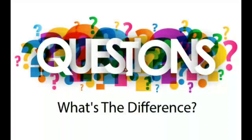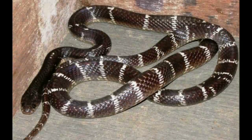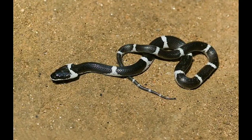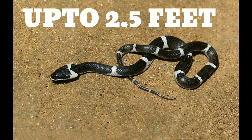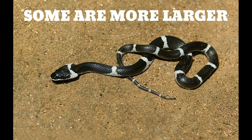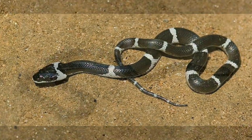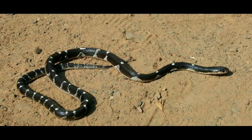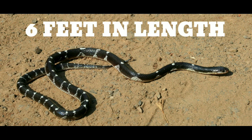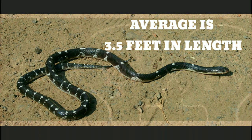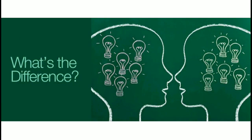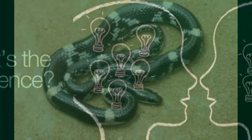Let us have a look at the differences. Length: wolf snakes and common kraits are different in size. An adult common wolf snake can be up to 2.5 feet in length, though some specimens exceed 2 feet, but those are rare. An adult common krait snake can be up to 6 feet in length, with an average of 3.5 feet. This raises the question of how to differentiate between an adult wolf snake and a baby common krait, which leads us to the next difference.